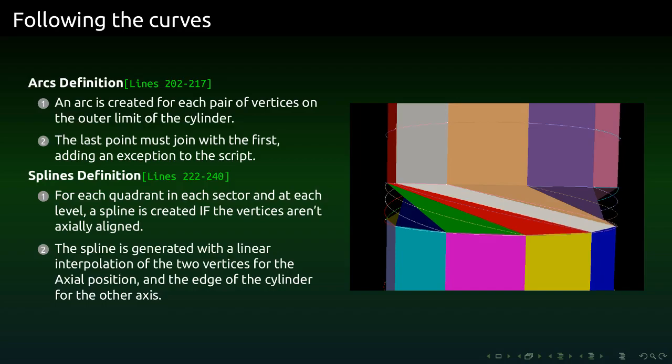SuperMarine simply passes through all pairs in the cylinder to create the arc for each of those pairs. For the spline, we pass from all the vertices inside of the geometry. The algorithm checks if the points are axially aligned. If it's not the case, it will automatically create a spline.